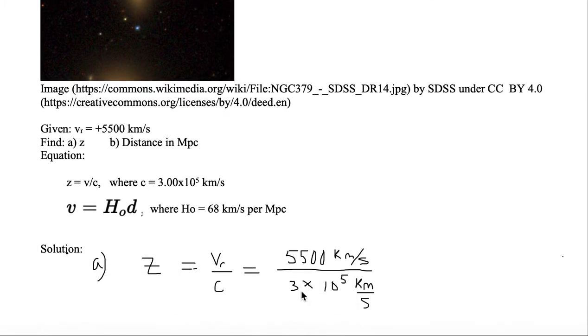So let's go ahead and solve. For the first one, we want to solve for the redshift parameter z, which is equal to the radial velocity divided by c. We substitute in for the radial velocity, which is 5,500 in the numerator, and we substitute c into the denominator. So the numerator is 5,500 km per second, and the denominator is 3 times 10 to the 5th.